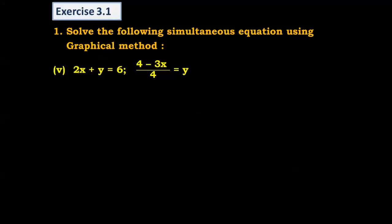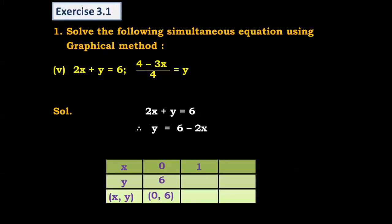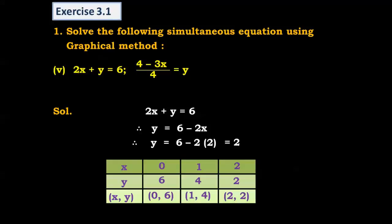Now one more question: find the solution of the equations 2x + y = 6 and (4 - 3x)/4 = y using the graphical method. For the first equation, write y = 6 - 2x. When x = 0, y = 6, giving (0, 6). When x = 1, y = 4, giving (1, 4). When x = 2, y = 2, giving (2, 2). These three points will be used to plot the first line.